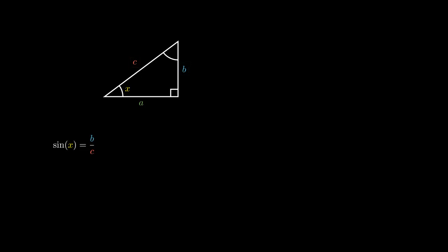Suppose this triangle has base A, height B, hypotenuse C, and angle X. By considering the side opposite the angle X and the hypotenuse, we can define the sine of X to be opposite over hypotenuse. Likewise, considering the side adjacent to the angle X and the hypotenuse, we can define the cosine of X to be adjacent over hypotenuse. And finally, considering the sides opposite and adjacent to the angle, we can define the tangent of X to be opposite over adjacent.